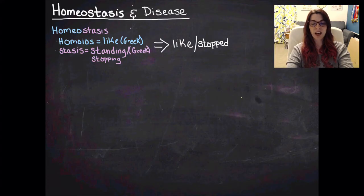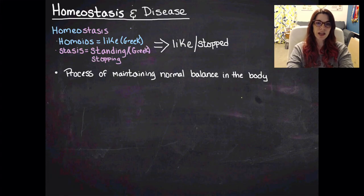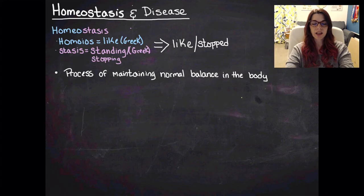So like stopped is when you put it together, but it's the process of maintaining a normal balance in the body. So it's keeping a stable balance within the body, and we're talking about specifically like keeping a stable body temperature, keeping a stable pH in different parts of the body, keeping a stable oxygenation level throughout the body. So that's homeostasis.